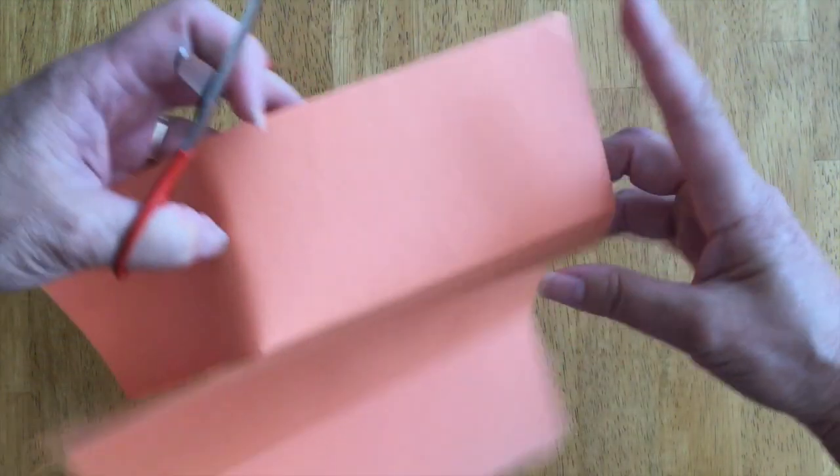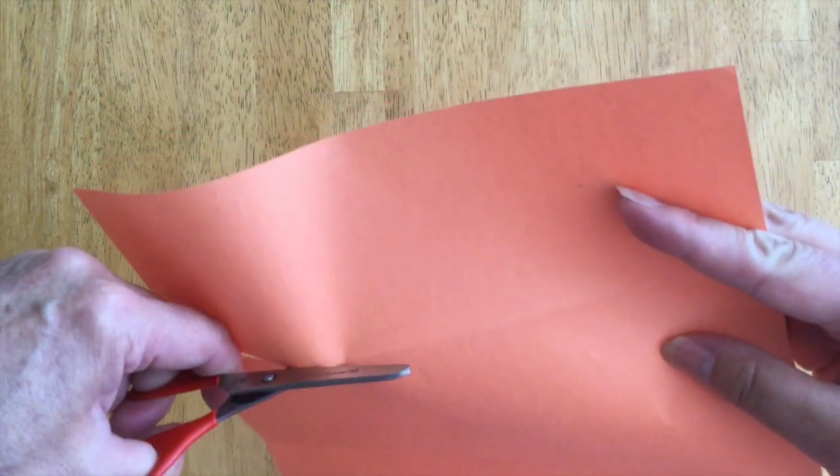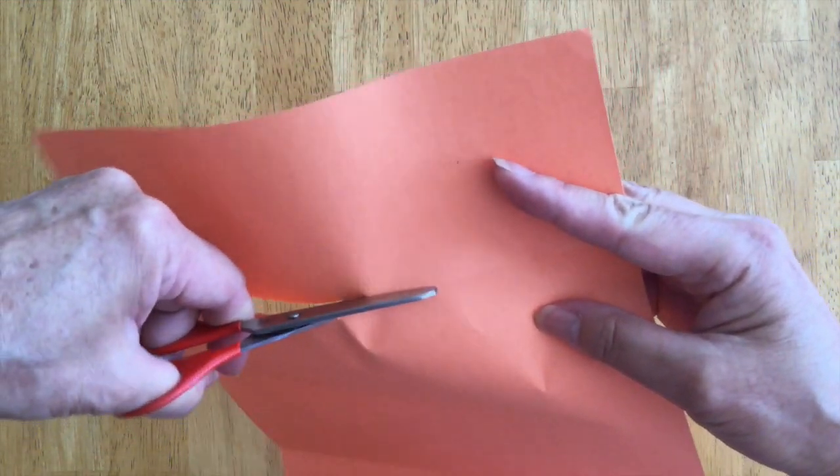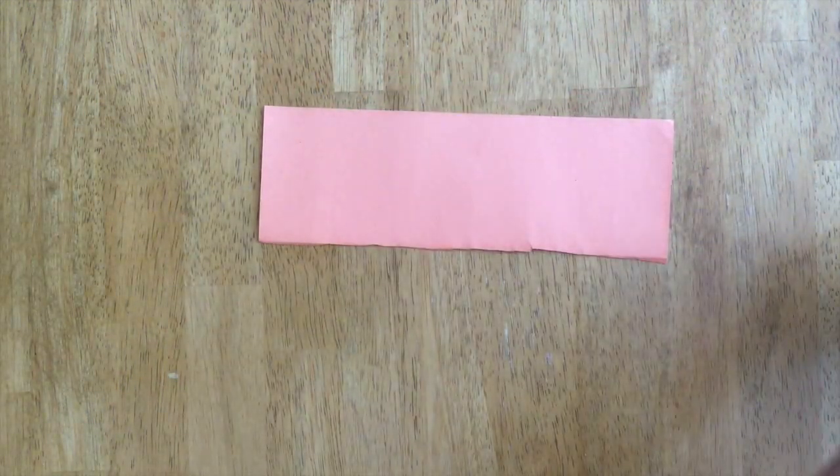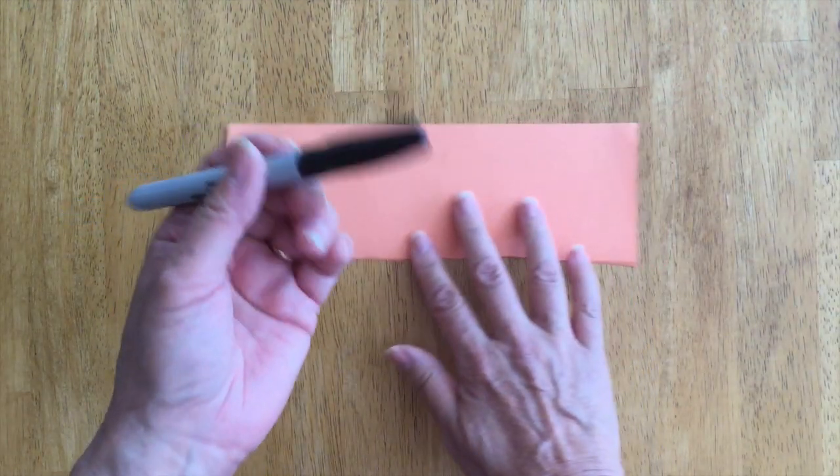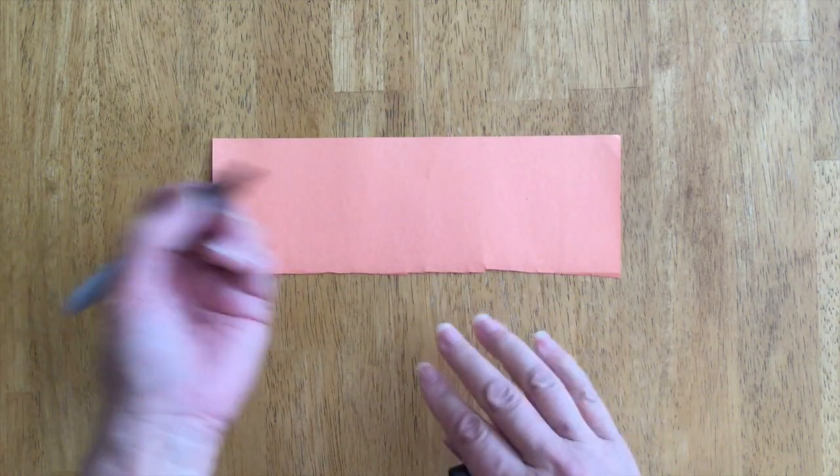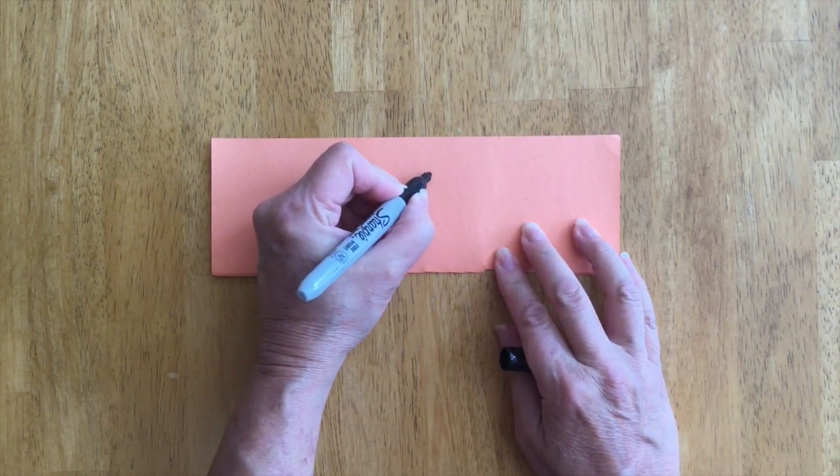And then after you get four strips of paper, what you're going to do is lay them out and then take a black marker like this and draw any face you want.